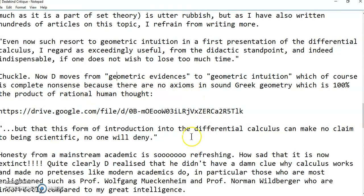I find that incredibly funny because now didactic moves from geometric evidences to geometric intuition, which is complete nonsense because there are no axioms in sound Greek geometry, which is 100% the product of rational human thought. What that means is that another sentient being who is thinking rationally would be able to realize these very same concepts in exactly the same way. They're called nomina from the singular nominon, a word that was coined by Immanuel Kant, the German philosopher.